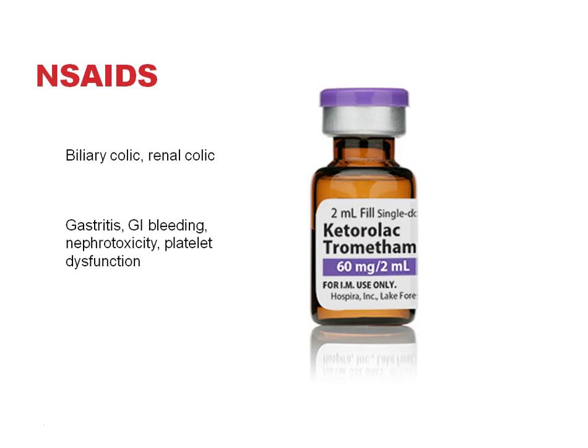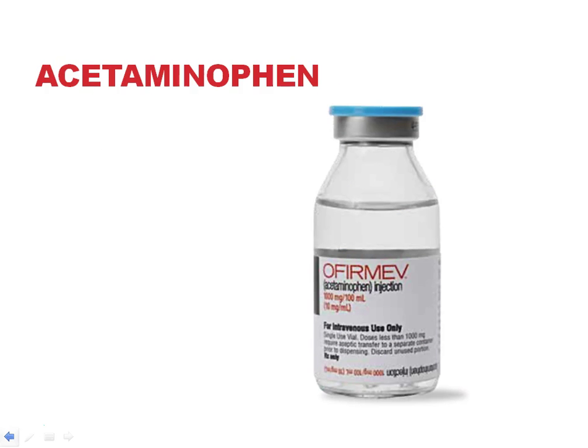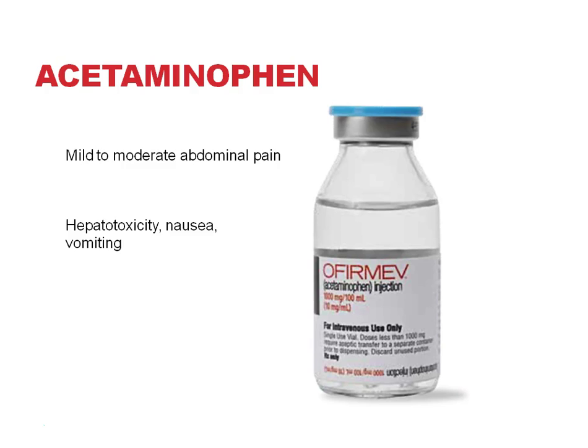NSAIDs can worsen conditions such as gastritis and can exacerbate GI bleeding, so they should be avoided when those are concerns. Acetaminophen is a great choice for mild to moderate abdominal pain and can now be given intravenously. It should obviously be avoided in patients with liver concerns, and the intravenous form may cause some nausea and vomiting.